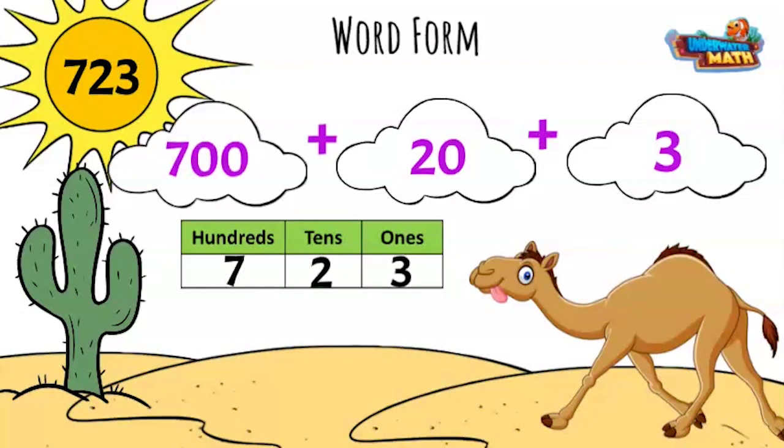We start with the hundreds. There are seven hundreds. There are two tens, or twenty, and three ones. Together they make 23. All together, the number is written seven hundred twenty-three.